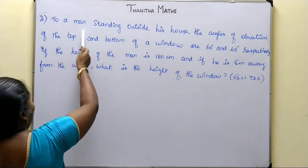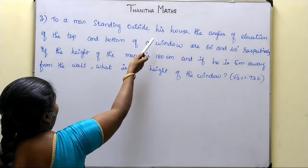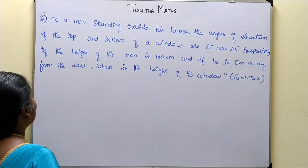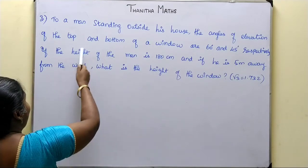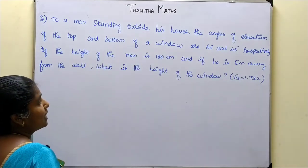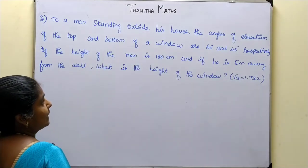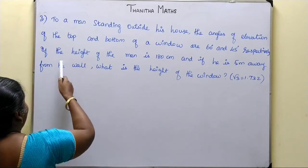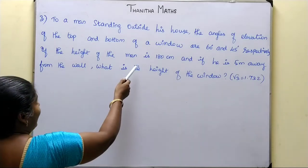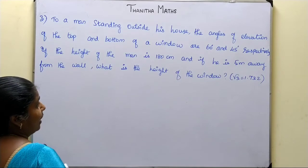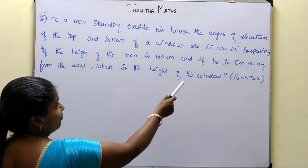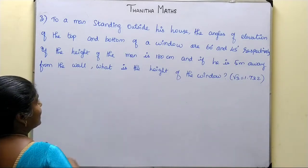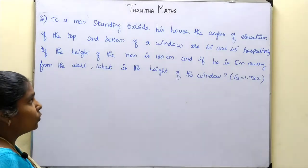A man standing outside his house observes the angles of elevation of the top and bottom of a window as 60 degrees and 45 degrees respectively. The height of the man is 180 centimeters and he is 5 meters away from the wall. What is the height of the window?